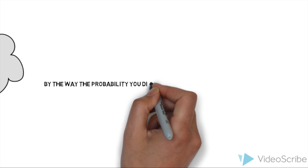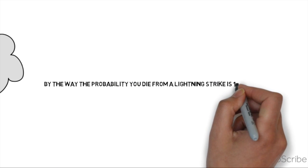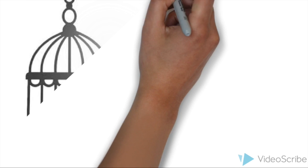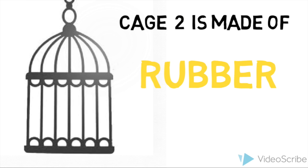By the way, the real odds of you dying from a lightning strike is 1 in 89,930. The first cage, cage 1, is made out of metal. The second cage, cage 2, is made out of rubber.